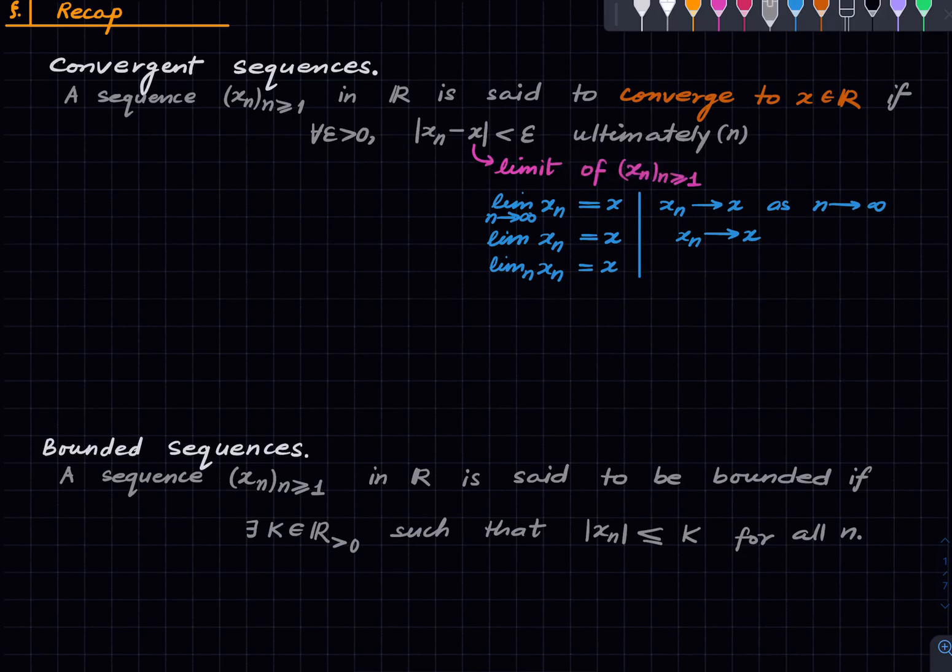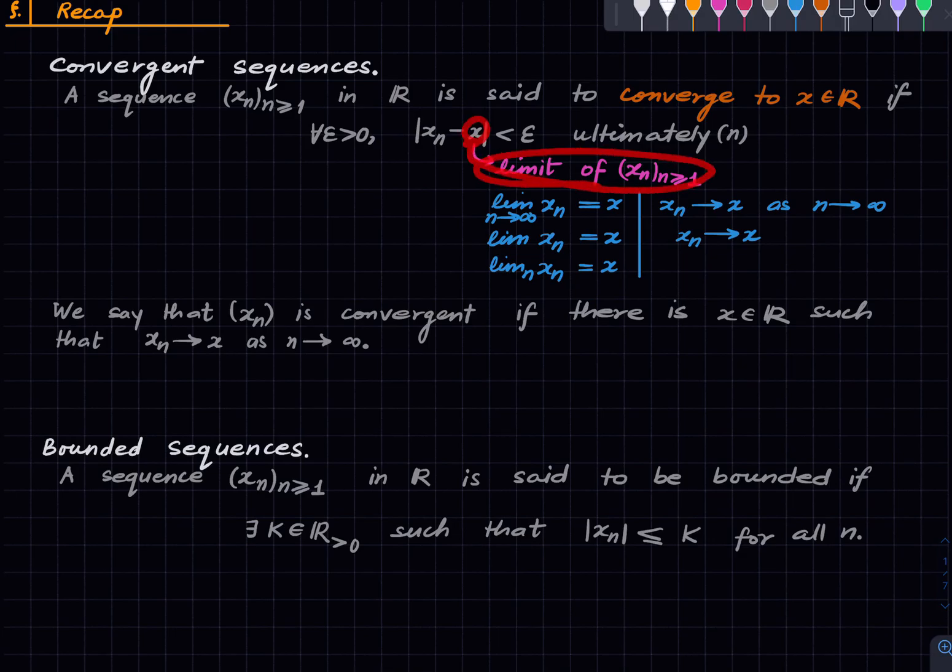Finally, once we have the definition of convergence to a point, we can now define a convergent sequence. We say that this is convergent if there is some point on the real line such that xn converges to it. First we define convergence to a point, then we define a sequence which is convergent by declaring it. We declare a sequence to be convergent if there is a point to which it converges. Also, the point to which a sequence converges is called the limit of the sequence. We saw that this is unique. A sequence cannot converge to two different points.